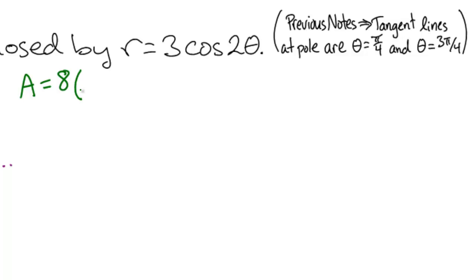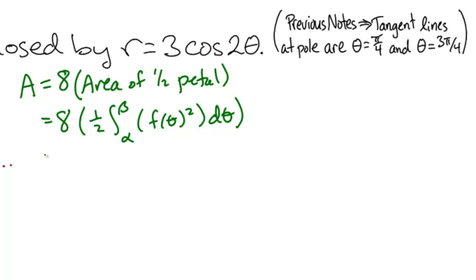So we're going to do 8 times the area of one half petal. So that'll be 8 times our formula for area, one half the integral from alpha to beta of f of theta squared d theta. As we determined, we will have alpha be 0 and beta be pi over 4. Our function, f of theta, is 3 cosine 2 theta squared d theta.